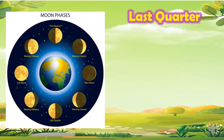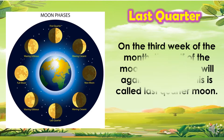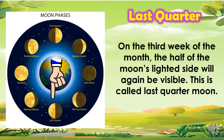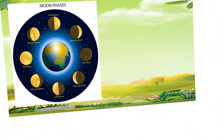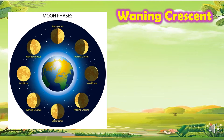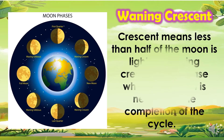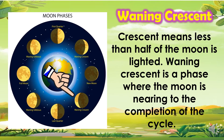Then we have the last quarter. On the third week of the month, the half of the moon's lighted side will again be visible. This is called the last quarter moon. Then we have the waning crescent. Crescent means less than half of the moon is lighted. The waning crescent is a phase where the moon is nearing the completion of the cycle.